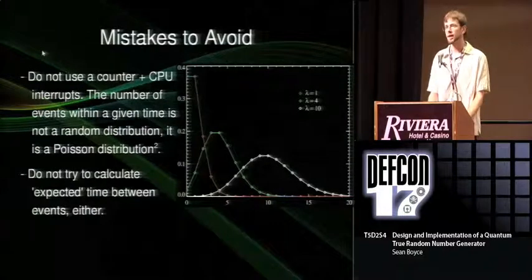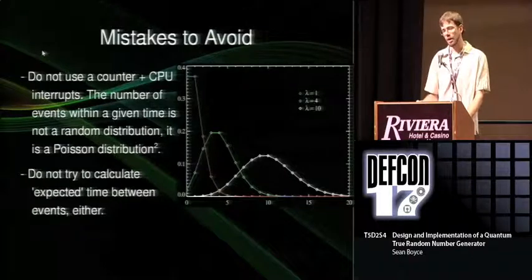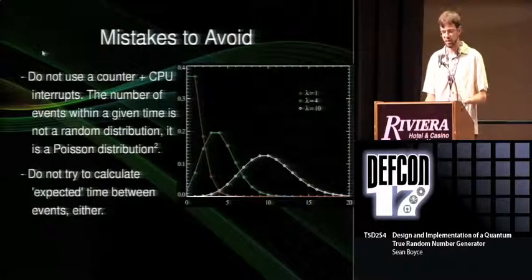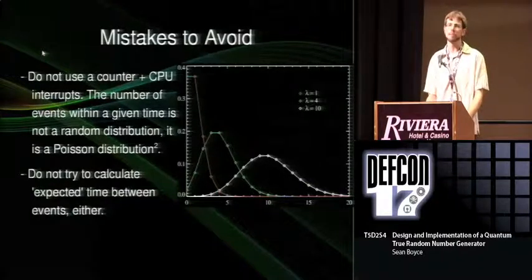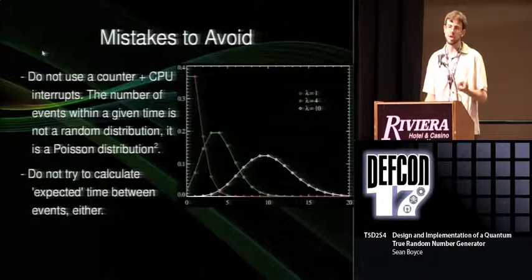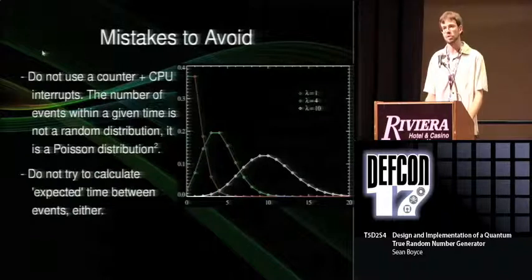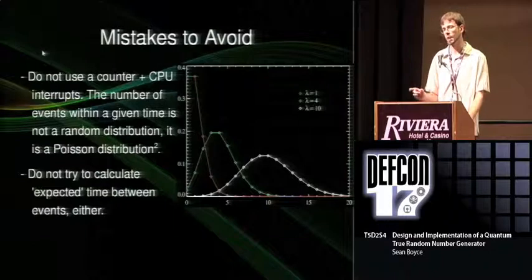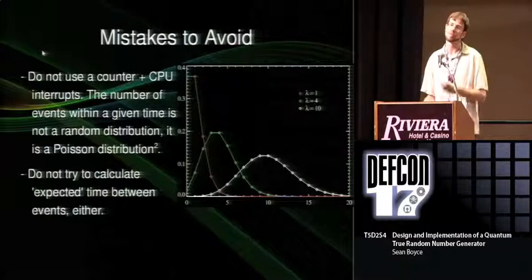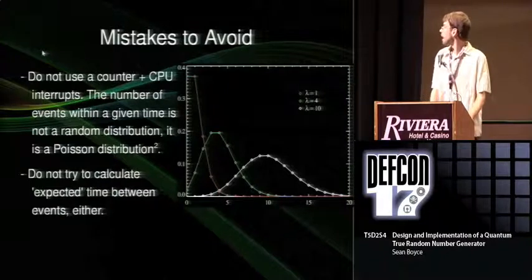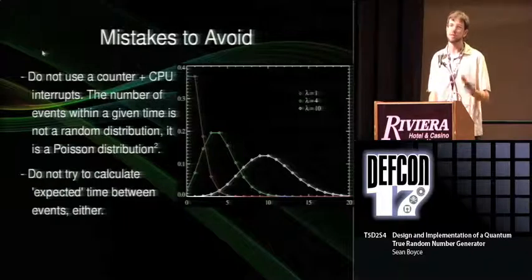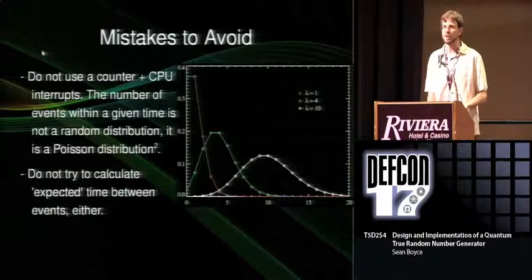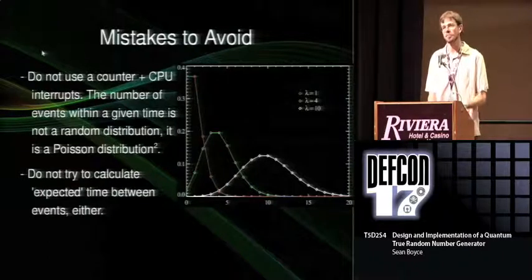The second mistake, which is probably worse, is to use a counter on some microcontroller or computer and then use a particle detector as a CPU interrupt, having it output whatever number the counter is at. The problem is that when you deal with particle detection statistics, the time between detections is defined not by a random distribution but by a Poisson distribution. This means there's some average value of time between particle detection events that is more likely than other times, so the numbers you output are defined by a Poisson distribution — which is very bad. You also should not try to calculate the expected time between particle detection events, because it will vary over time, you don't know exactly how many atoms there are, and you don't know your detector efficiency with absolute precision. So not only will you have a bias, you will no longer know what it is.